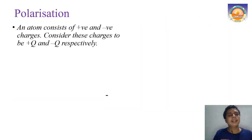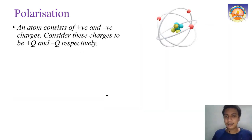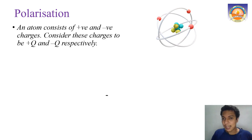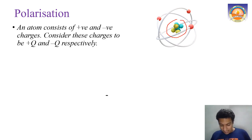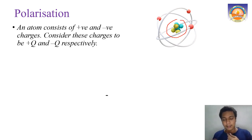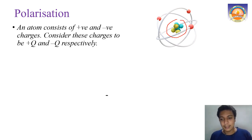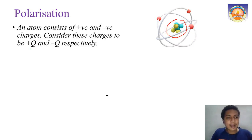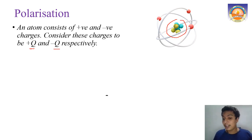Before understanding polarization, consider an atom: it has a nucleus consisting of protons and neutrons, where protons are positively charged and electrons are negatively charged. The total atom stays neutral because we have equal numbers of positive and negative charges. For our consideration we take the total positive charge as +q and total negative charge as -q.